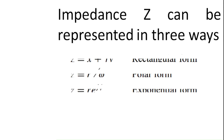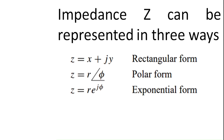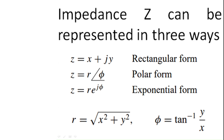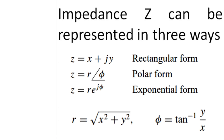Impedance z can be represented in three ways: z equals x plus jy, which is rectangular form where x is the real part and y is the imaginary part; z equals r at an angle of phi, which is called polar form; and z equals r e to the power j phi, which is called exponential form.